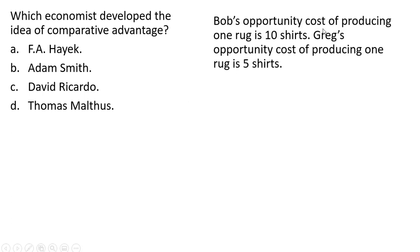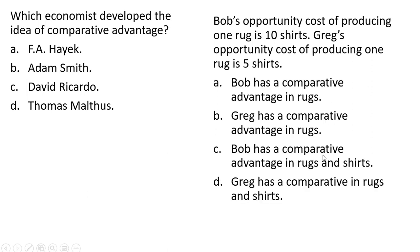Bob's opportunity cost of producing one rug is ten shirts. Greg's opportunity cost of producing one rug is five shirts. The correct answer here is Greg has a comparative advantage in rugs. When Greg produces one rug he gives up five shirts, which is a lower opportunity cost than Bob. When Bob produces a rug he sacrifices ten shirts. So the correct answer is Greg has a comparative advantage in rugs.